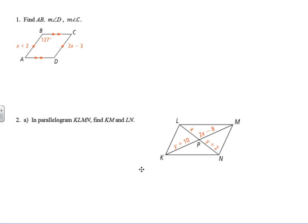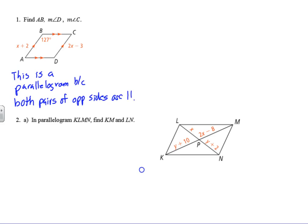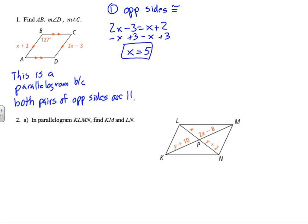Find AB, the measure of angle D, and the measure of angle C. First, I want to recognize this is a parallelogram because both pairs of opposite sides are parallel, as shown by the tick marks. Opposite sides are congruent, so 2x minus 3 equals x plus 2. Subtract x and add 3 — we get x equals 5. AB is x plus 2, which is 5 plus 2, so AB equals 7.